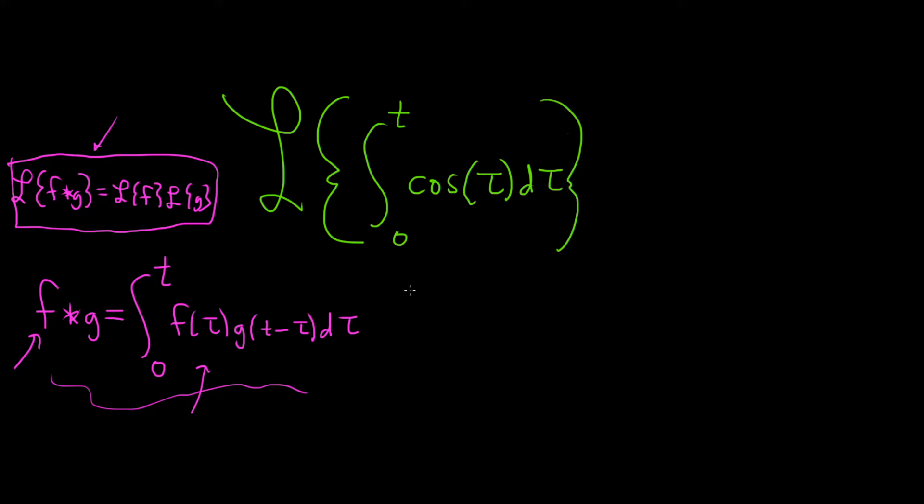In this example, we simply have to identify f and g. It looks like f is going to be cosine of t. That's pretty clear. And then g of t will have to be 1 in this case. So g of t is 1.